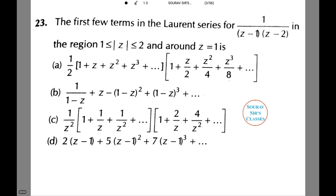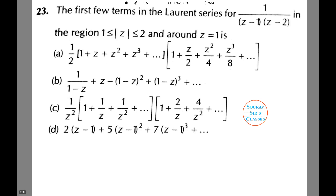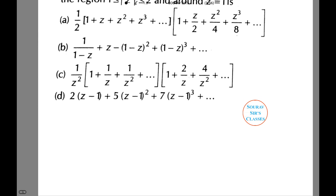In the next question we need to figure out the first few terms in the Laurent series for 1 over (z minus 1) into (z minus 2) in the region where mod z lies between 1 and 2, and around z equals to 1.